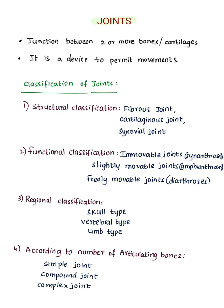Structural classification is based on the material binding the articulating bones. If the material is fibrous tissue, it is a fibrous joint. If the material is cartilage, it is a cartilaginous joint.